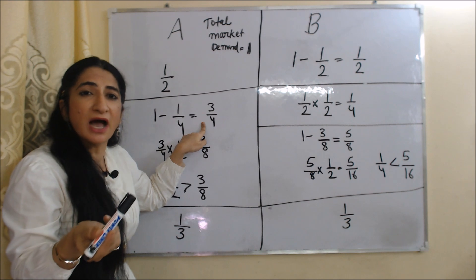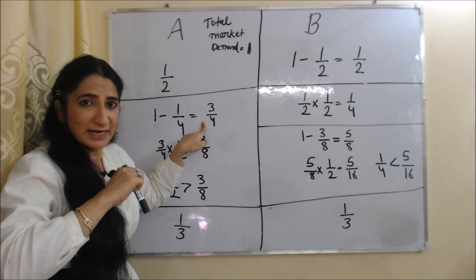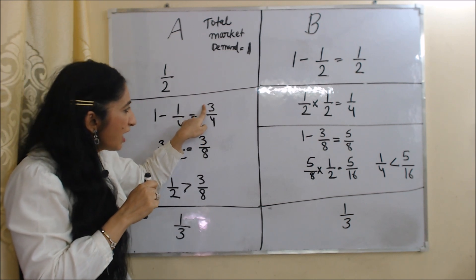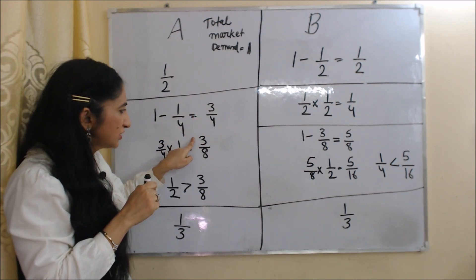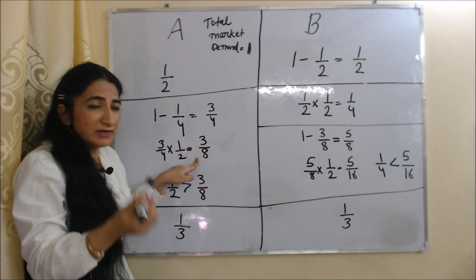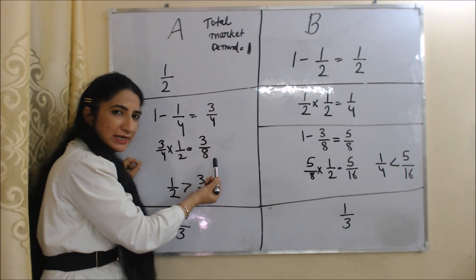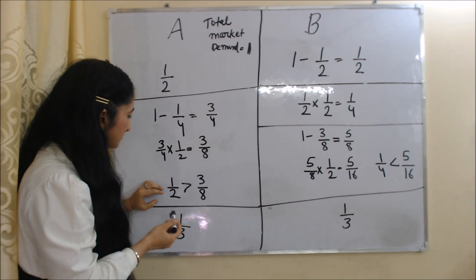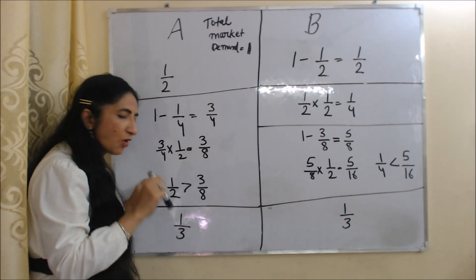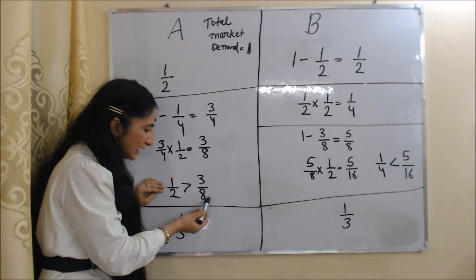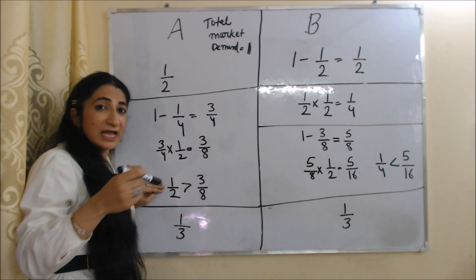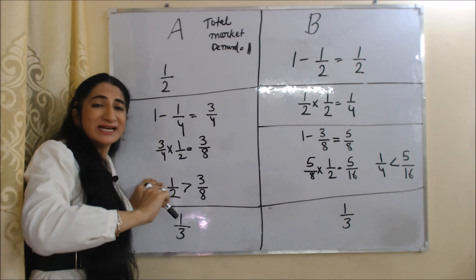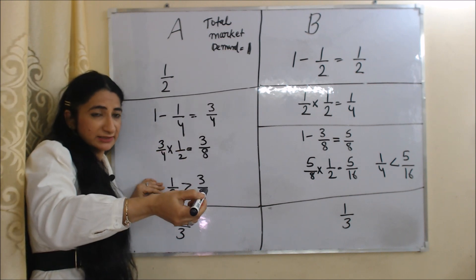A will produce half of the available market demand. Half of 3/4 is 3/8, so A will produce 3/8. You can see production of A has reduced — initially A was producing 1/2, but now he is producing 3/8. As A reduces production, supply falls but demand is constant, so price and profit increase.